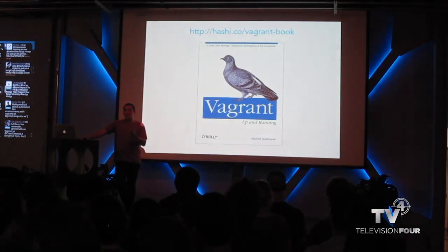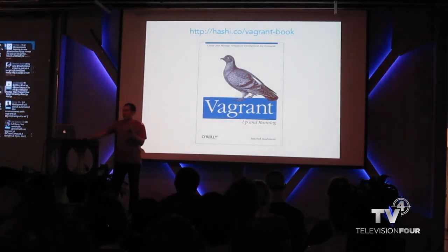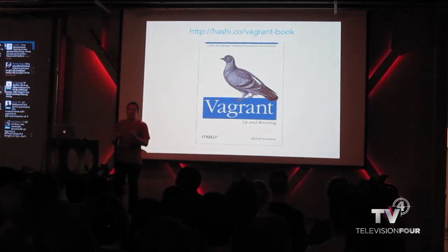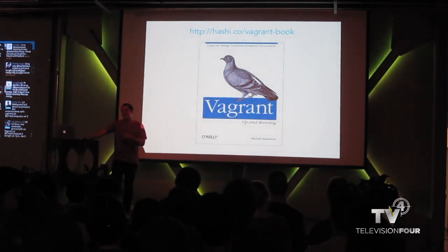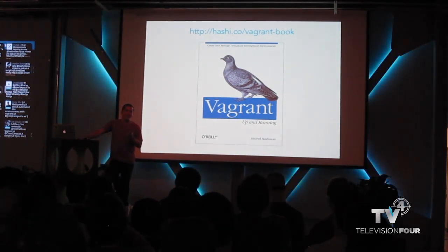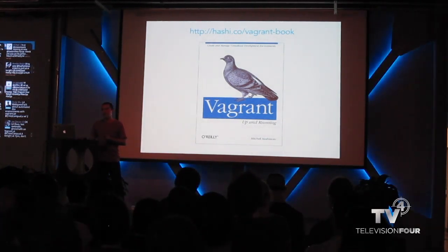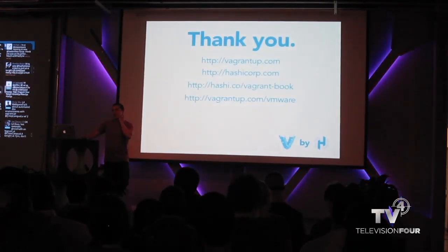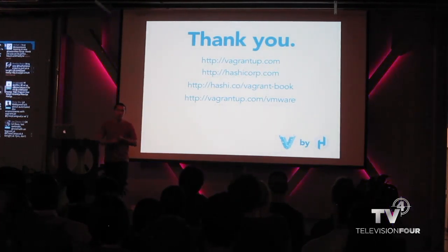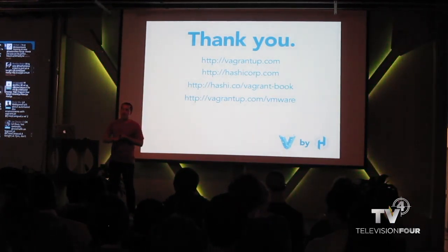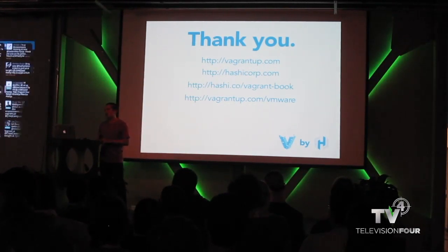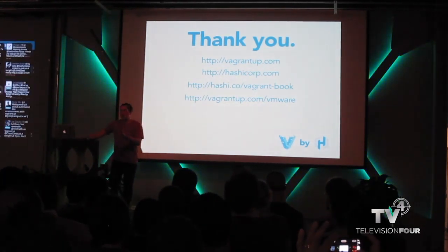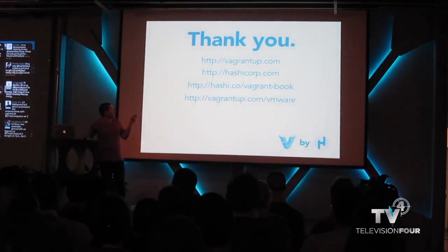The animal on the Vagrant book is a pigeon — technically a rock dove, but it's a pigeon. They sent me the cover and said 'here's your animal, it's a rock dove, it's beautiful,' and my response was one sentence: 'It is a pigeon.' I've come to terms with it. That's it — I didn't cover any of the advanced stuff, but this is a very good overview of why you should be using Vagrant, what it has to offer, how you should be integrating it, and where and why it works.